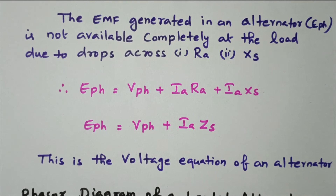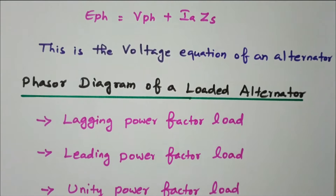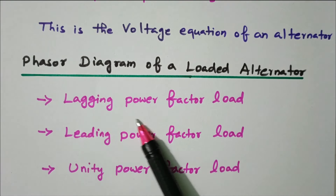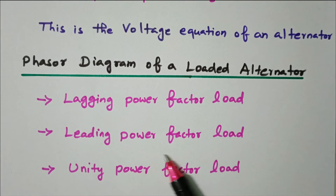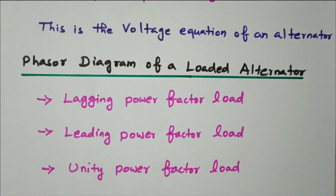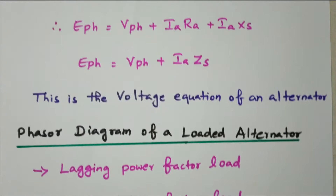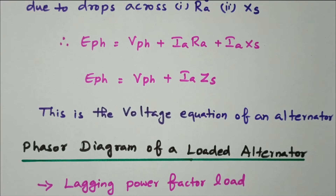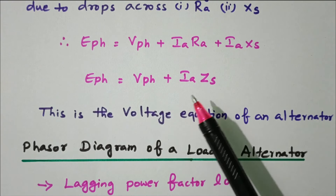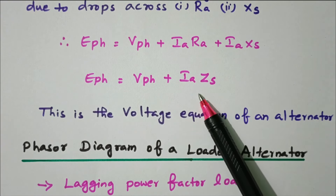Based on the voltage equation, we can draw the phasor diagram for lagging power factor load, leading power factor load, and unity power factor load. Separate videos are available for these three power factors. The aim of the phasor diagram is that E-phase is the vector sum of V-phase and the synchronous reactance drop.